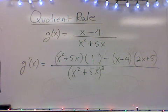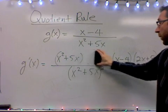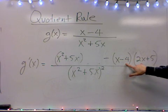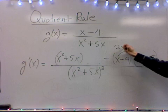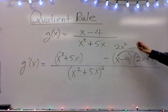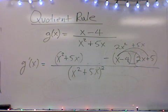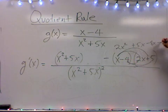The second half of it is the top unchanged — that's just copying it down right from the problem — times the derivative of the bottom, which would be 2x plus 5. From here, you just use a little simplification to get a better answer. You can multiply 1 to the stuff on the left, and that will basically just make that disappear. You have to use the FOIL method here to simplify it. We've got x times 2x is 2x squared. Multiply the outers gives you 5x. Multiply the inners gives you negative 8x. And multiply the last two gives you negative 20.